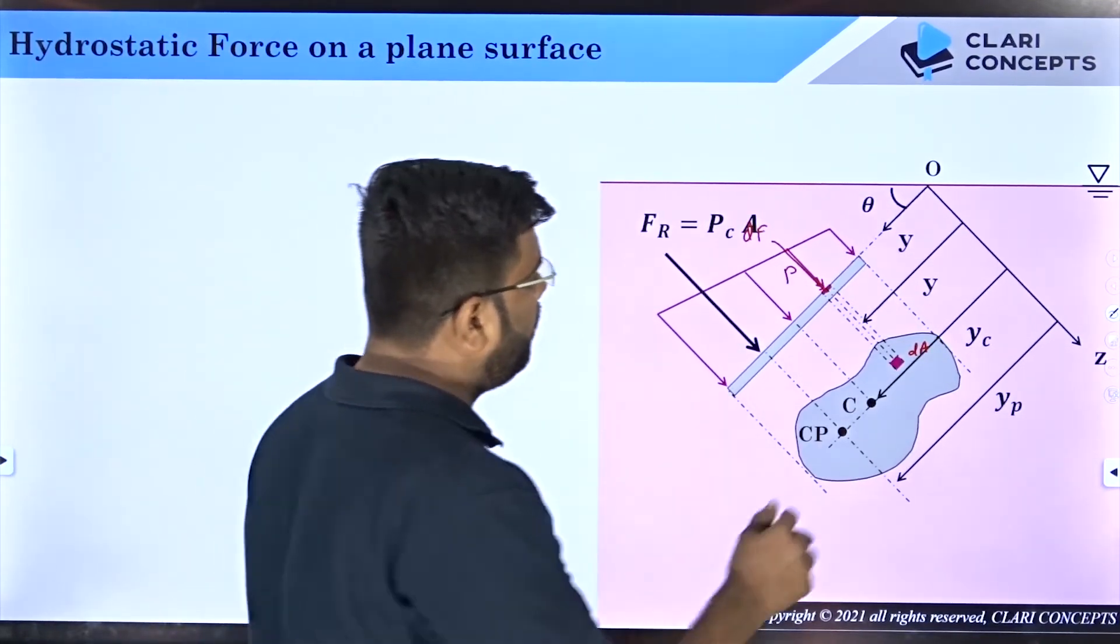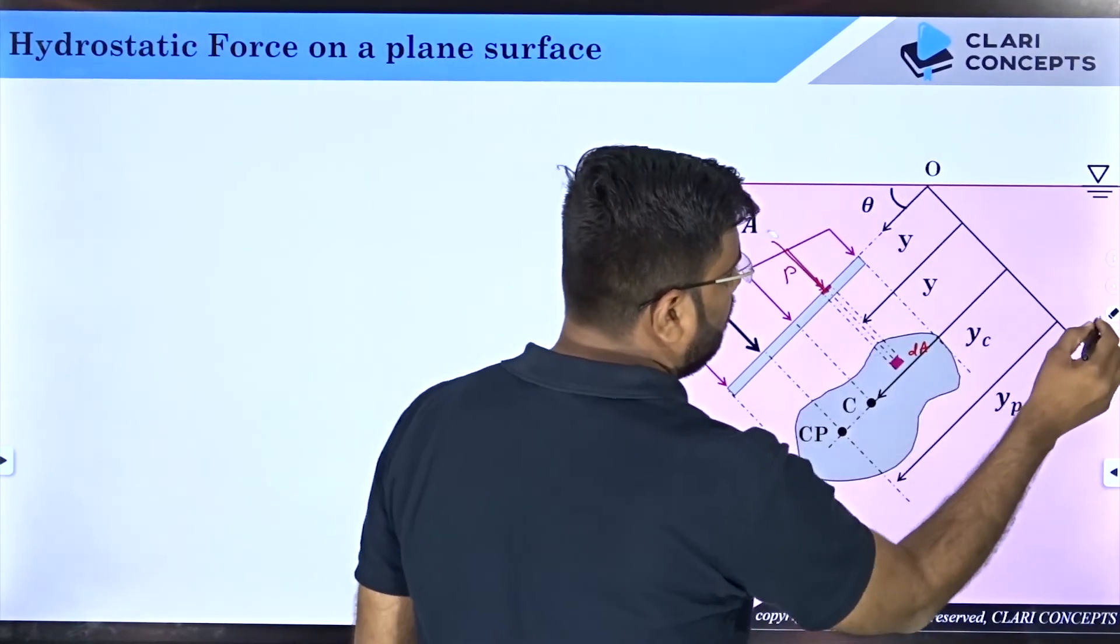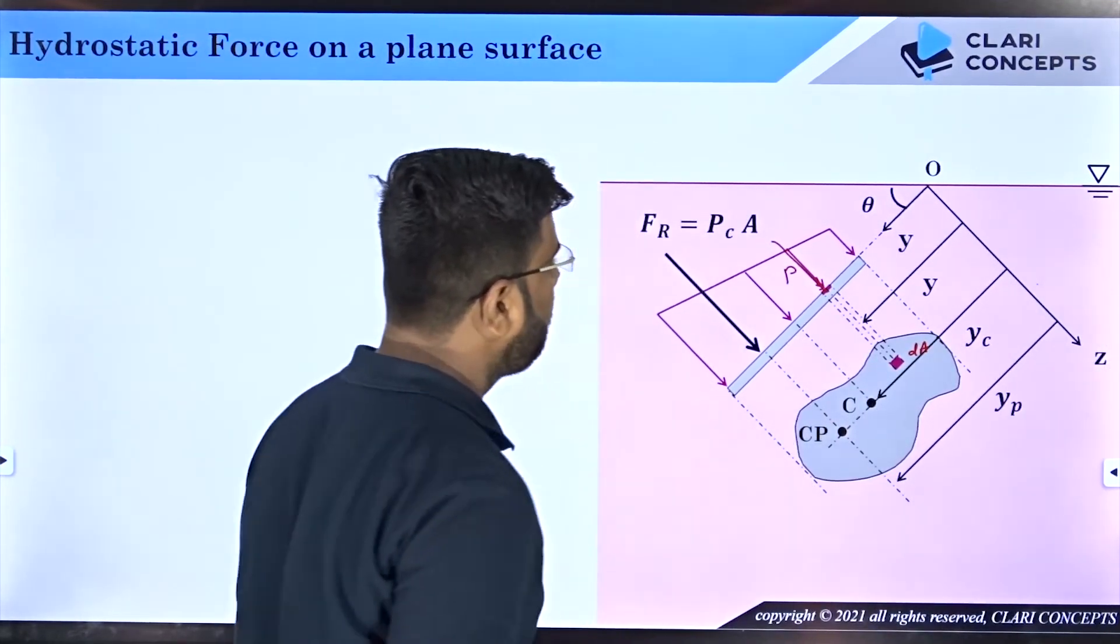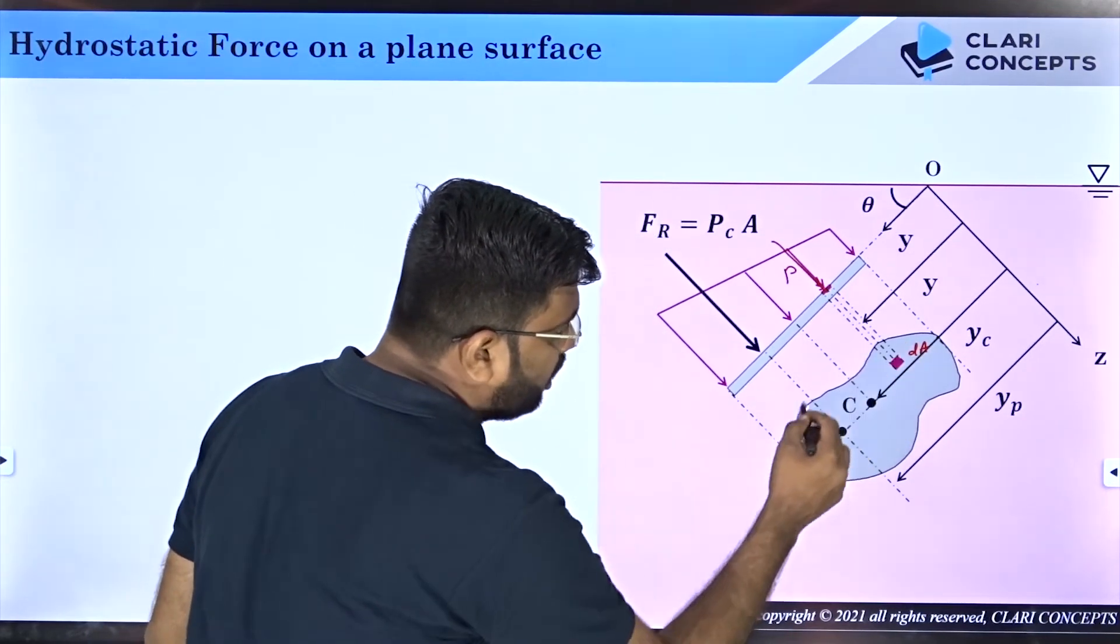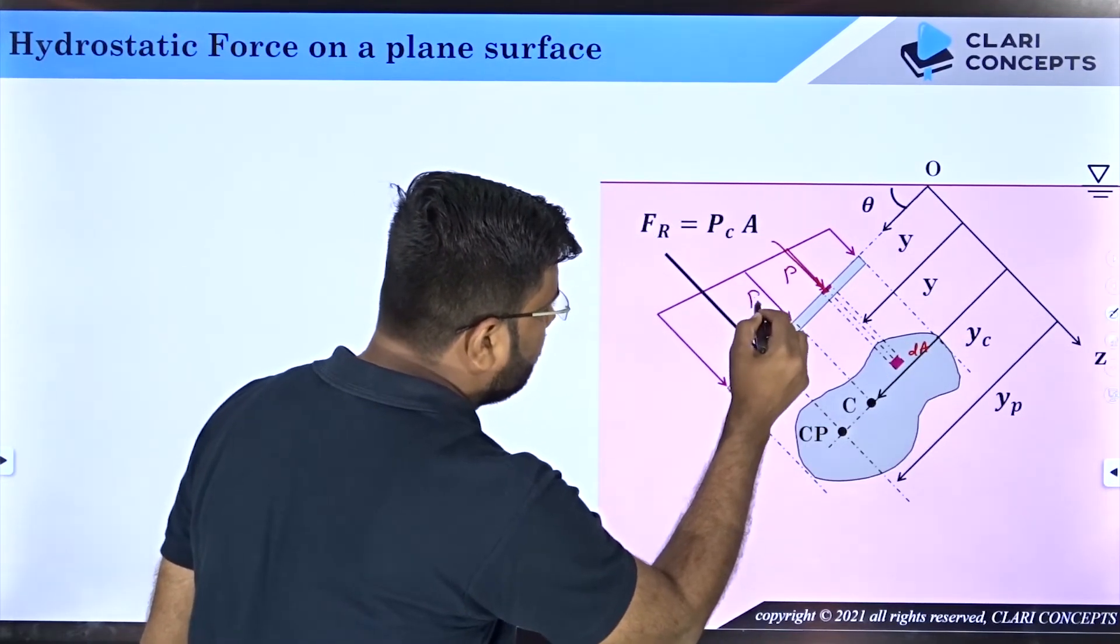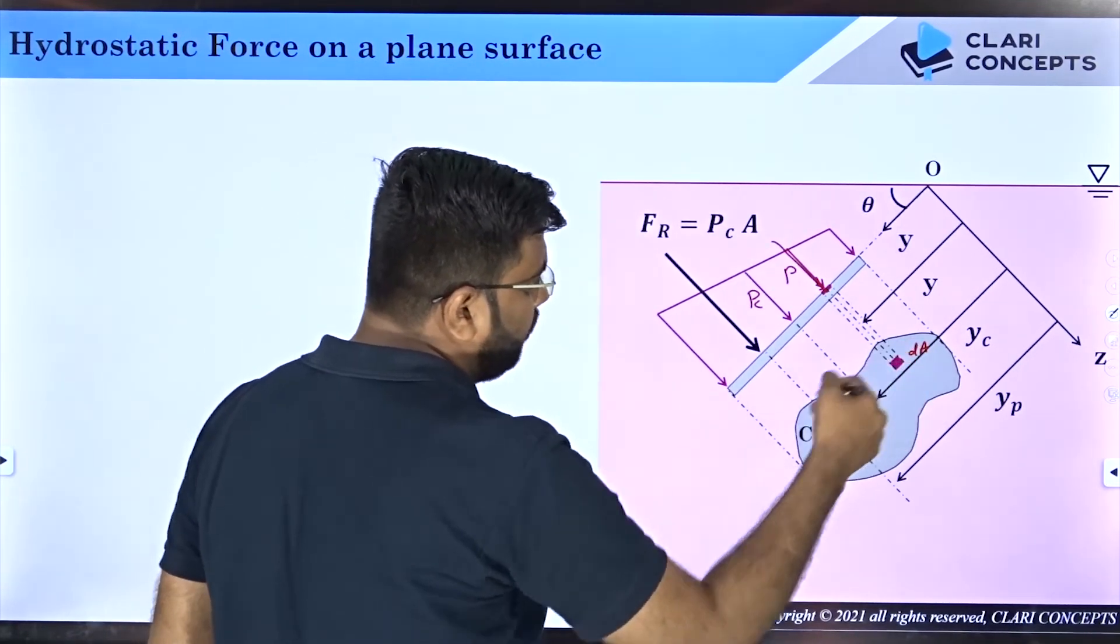The total force goes to Pc into area A, where Pc is the pressure at the centroid point, centroid of the surface area. So this is Pc basically, and A is the total area of the surface.